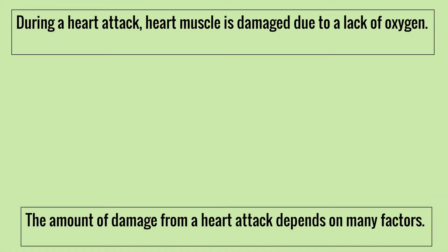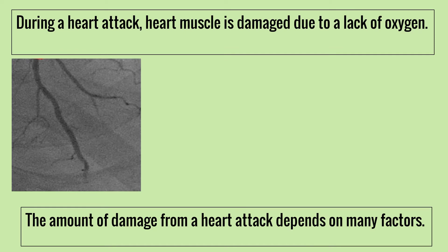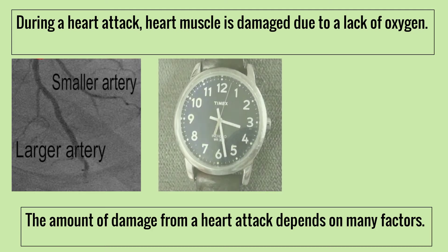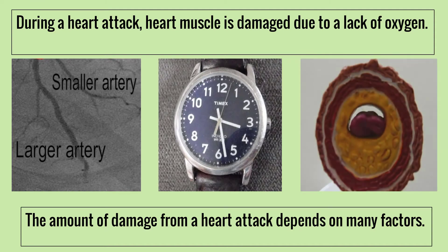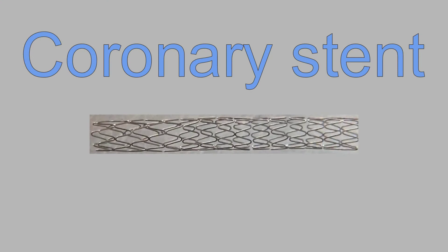During a heart attack, heart muscle is damaged due to a lack of oxygen. The amount of damage from a heart attack depends on many factors. The main ones include the size of the artery, the length of time the artery is blocked, and how completely blocked the artery is. The damage from a heart attack can be permanent if the blockage is not treated quickly.